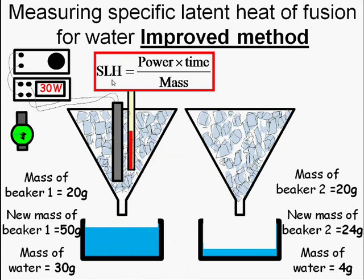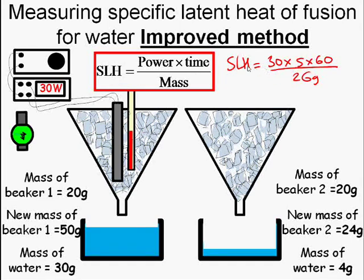So now when we calculate our specific latent heat, the power and the time are all the same, but the new mass is going to be the mass of the water in this example minus the mass of this one, because this is what would have melted anyway in the experiment. So we just want to find out the energy supplied, what that did to the water, to the ice in the water, not what the environment did to it. So this allows us to subtract the environmental influences, and it allows us to calculate a much more accurate value for the specific latent heat of water.